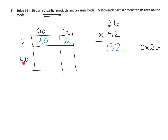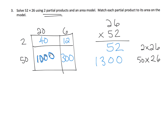For the next row: 50 times 6 — that's five tens times 6 — is 30 tens, which is 300. Then five tens times two tens is ten hundreds, which is 1,000. Adding this row together we get 1,300, which is 50 times 26. The first partial product is 2 times 26, and the second is 50 times 26 — thought of as five tens.